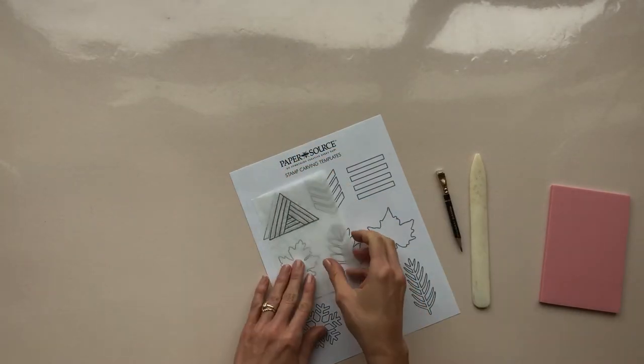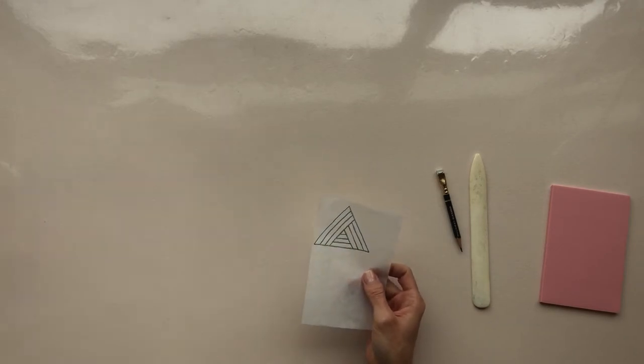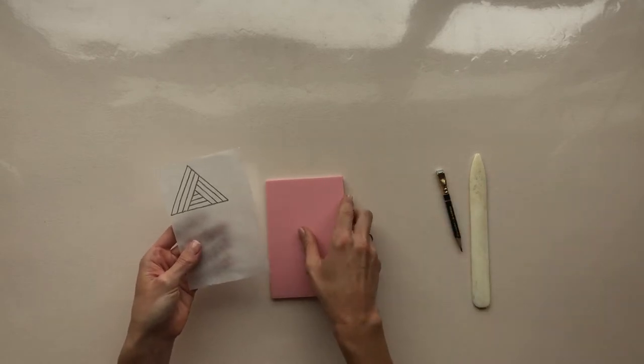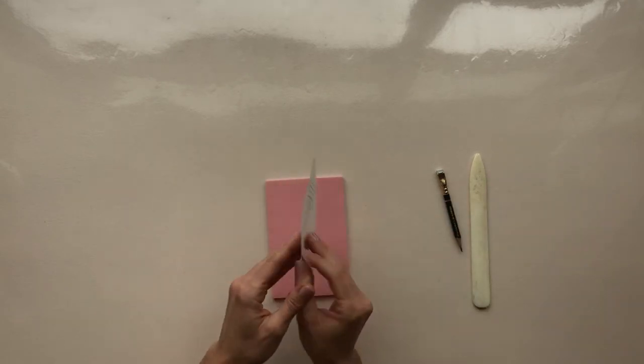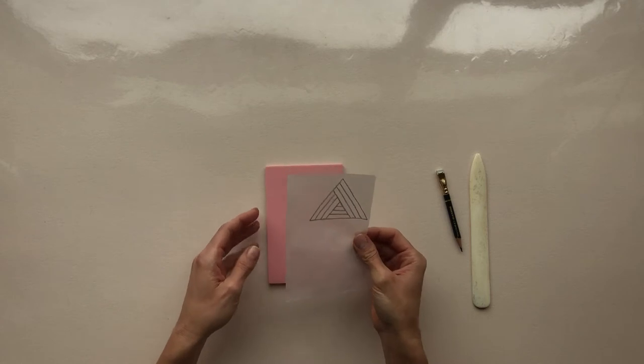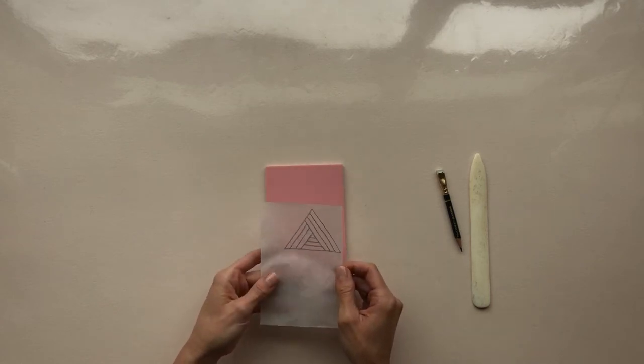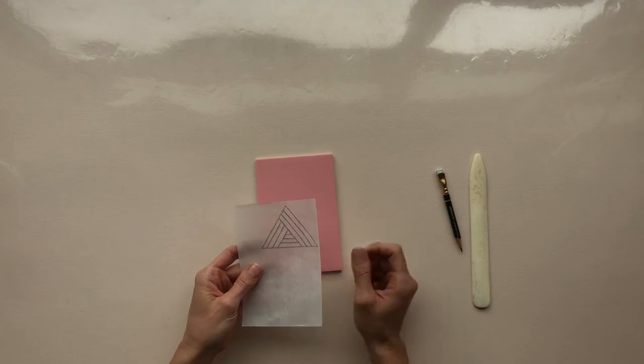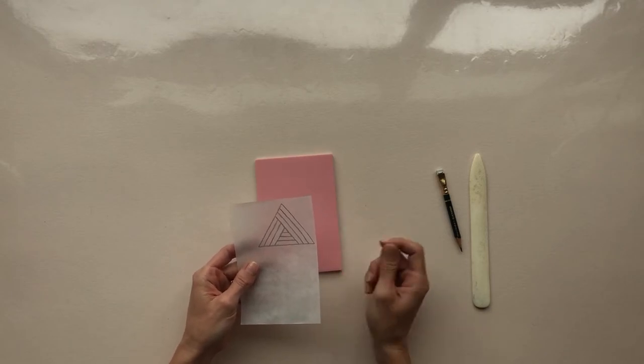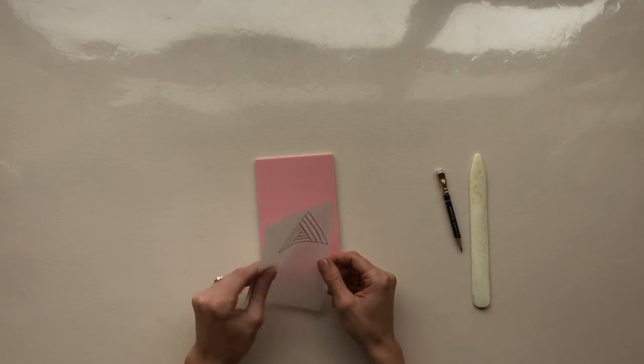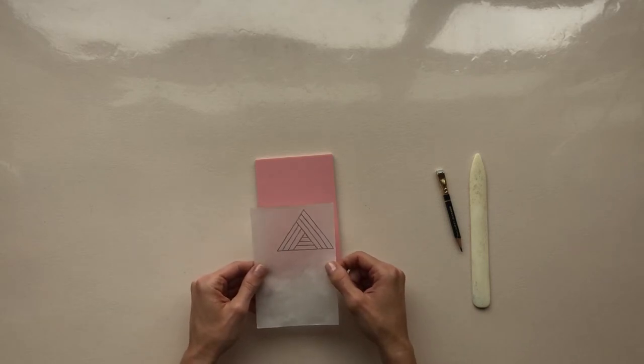Okay once you have your design on the tracing paper then you can go ahead and transfer it onto your block. So you're going to flip this upside down so that the pencil graphite is face down. That's important to keep in mind if you're drawing something that has a right or wrong direction to it or doing words. Know that you're going to have to kind of flip it over and it will be reversed.